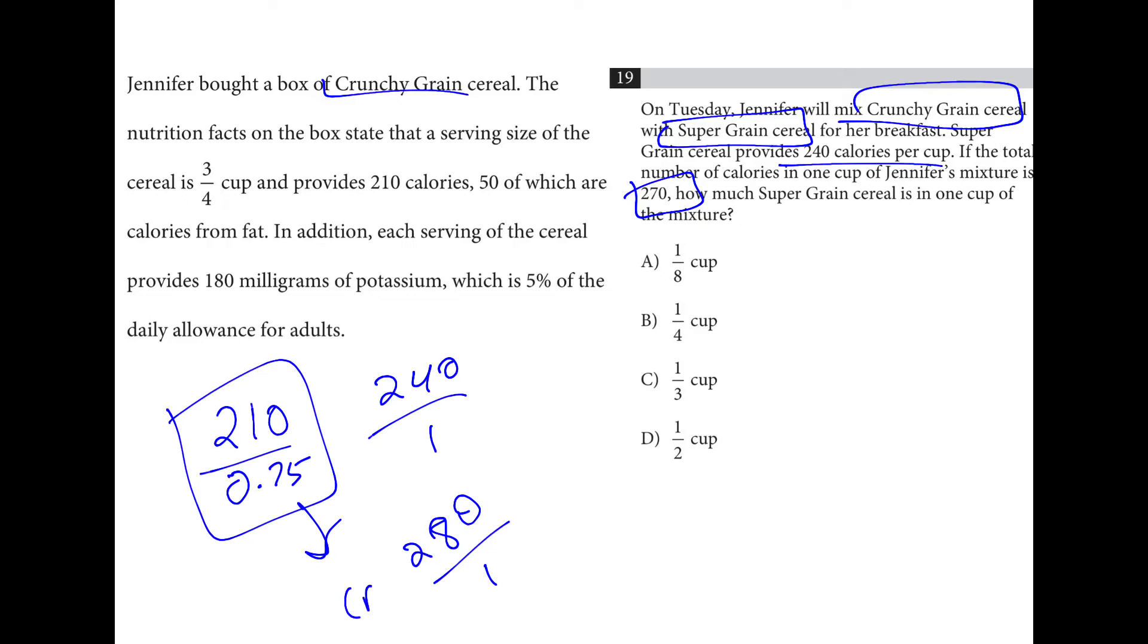That's the crunchy grain one. The 240 is the super grain. So if it was half and half, I'd be at 260. So I need more of the crunchy grain than the super grain at a 3 to 1 ratio. So here's my quarter cup. And if you wanted to test to see if this worked, you could plug these numbers into this formula and you do get 270.